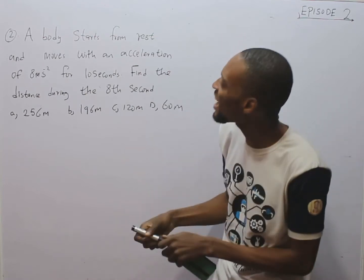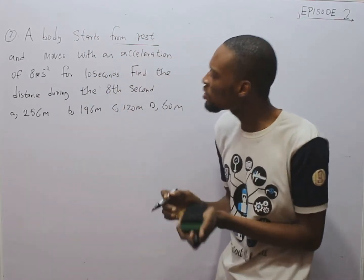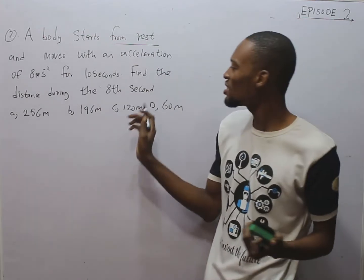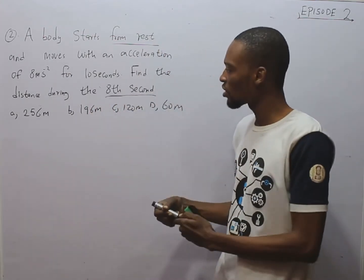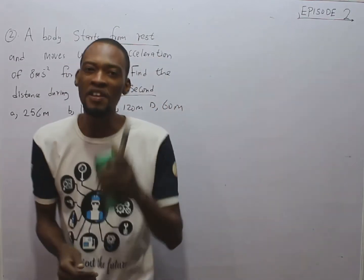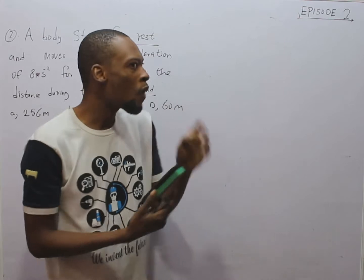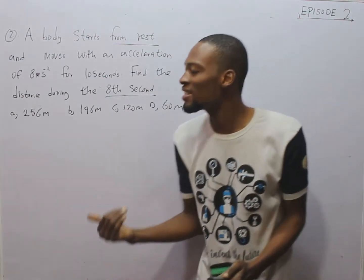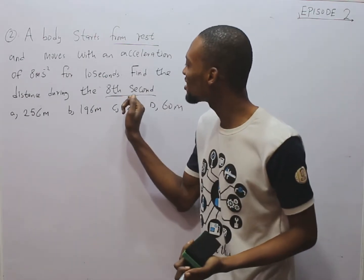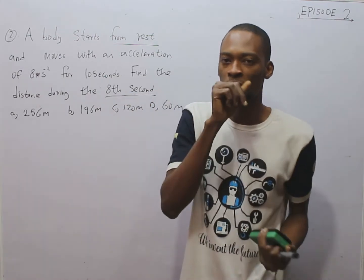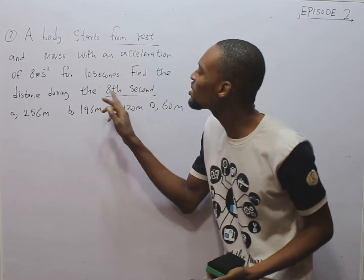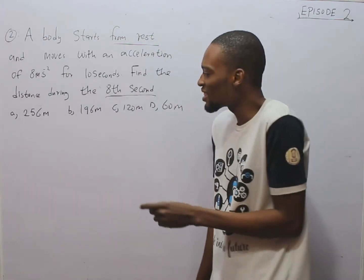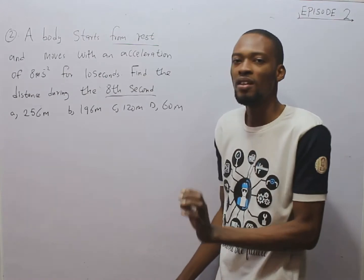It says a body starts from rest, moves with an acceleration of 8 meters per second squared for 10 seconds. Find the distance during the 8th second. Post-Titemi is different from primary 6. A lot of persons will go ahead to find the distance in 8 seconds — that is not the question. It says the distance during the 8th second. It does not say distance covered after 8 seconds. It means the distance in between the 7th and 8th seconds. That is what it means.